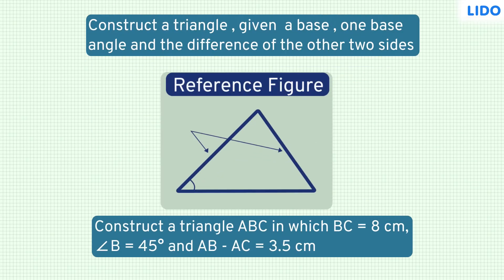Let's take an example. We need to construct a triangle ABC where BC is 8 cm, angle B is 45 degrees, and AB minus AC is 3.5 cm. How do we go about it?